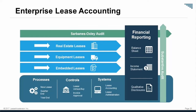As they thought about how to get closer to where the transactions are happening — because you have to get the data from somewhere — they started to focus on data. They realized there are really three different processes within most large international companies: real estate, equipment leases typically managed on spreadsheets locally if managed at all, and embedded leases which nobody was really tracking in service agreements. Each has different stakeholders with different motivations.